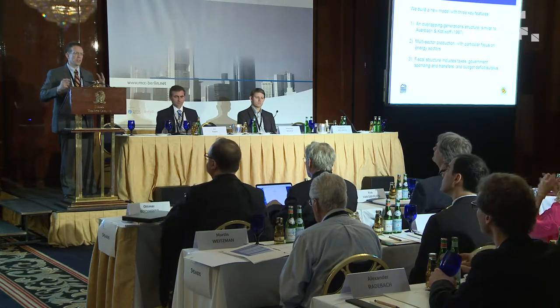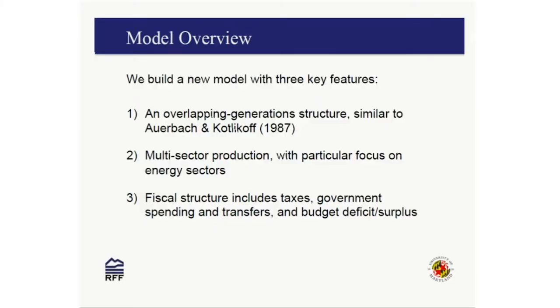The model we've built is a new model that has three key features. First, an overlapping generations structure. Second, multi-sector production — most overlapping generations models have just a single production sector, and obviously you can't model a carbon tax well in a model like that. Third, a full representation of the fiscal structure: taxes, government spending, transfers, budget deficits and surpluses — the key aspects we need to look at the tax piece of this.